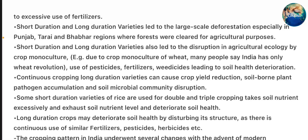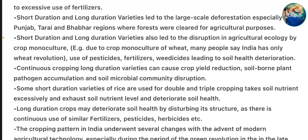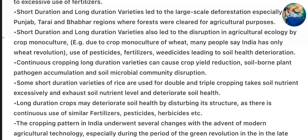Short and long duration varieties also lead to disruption in agricultural ecology by crop monoculture. For example, due to crop monoculture of wheat, many people say India has only a wheat revolution. Use of pesticides, fertilizers, and weedicides lead to soil health deterioration. Continuous cropping in long duration varieties can cause crop yield reduction, soil-borne plant pathogen accumulation, and soil microbial community disruption.